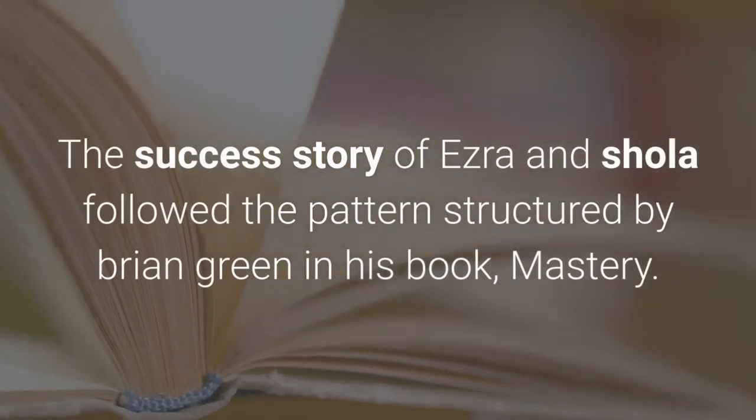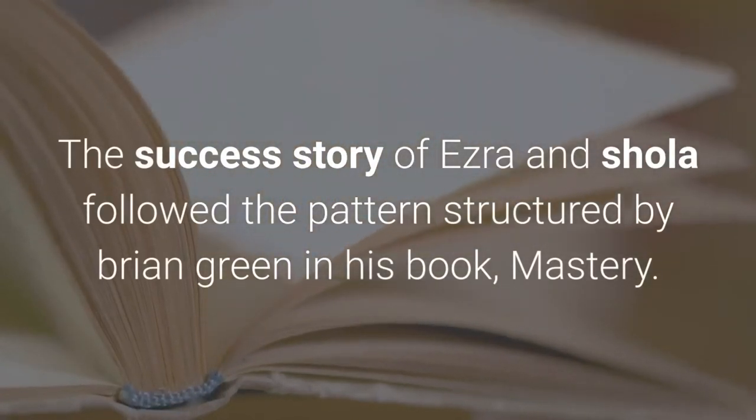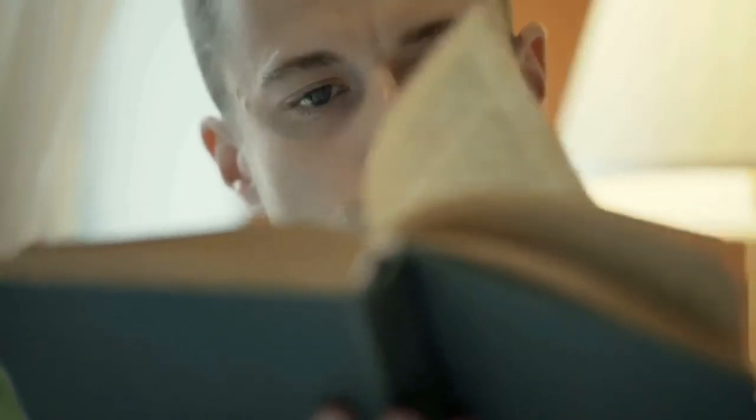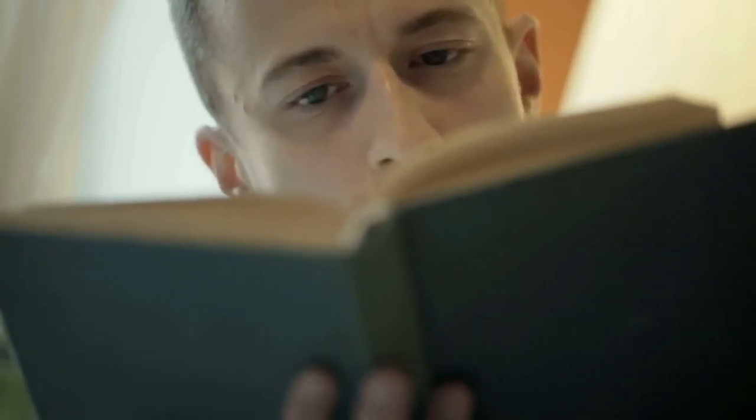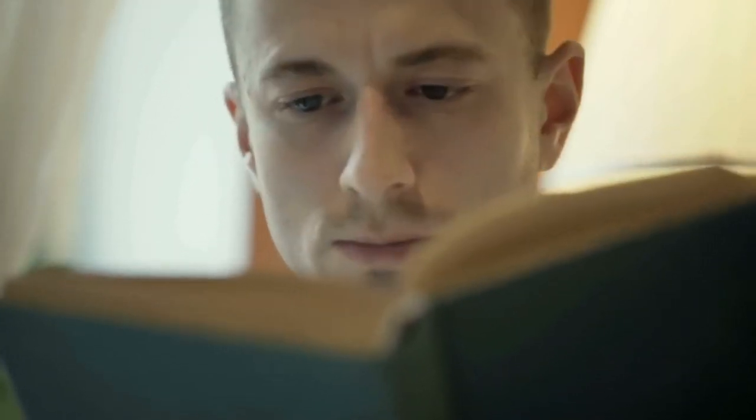The success story of Ezra and Shola followed the pattern structured by Robert Greene in his book, Mastery. It's a great read, and if you haven't read it, I highly suggest you check it out. But just as a summary, Robert Greene explains that as a master in a field, you will see solutions to problems where most people can hardly see the problems.